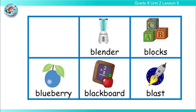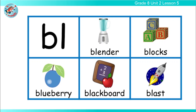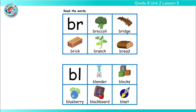Now look at these words: blender, blocks, blueberry, blackboard, blast. What's the significant sound among these words? Yes, that is the 'bl' sound. So now we have identified two sounds in English language: the 'br' sound and the 'bl' sound.